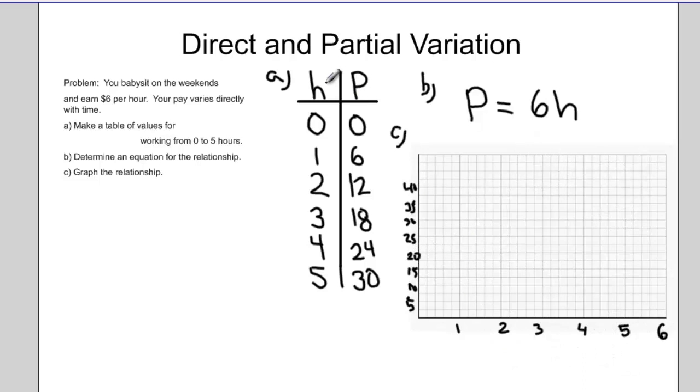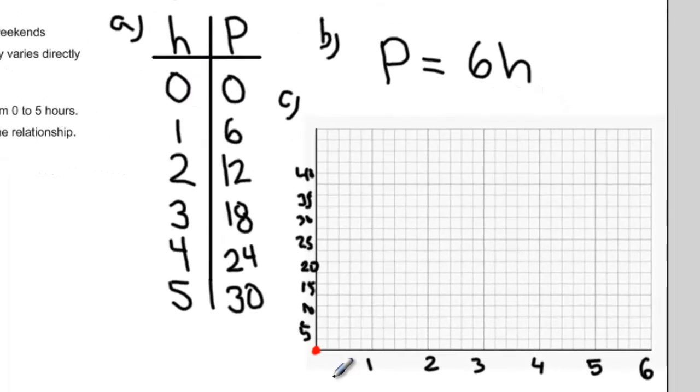Question C is asking me to graph this relationship. So I can plot my points starting at 0, 0. One hour I get $6, somewhere in here.